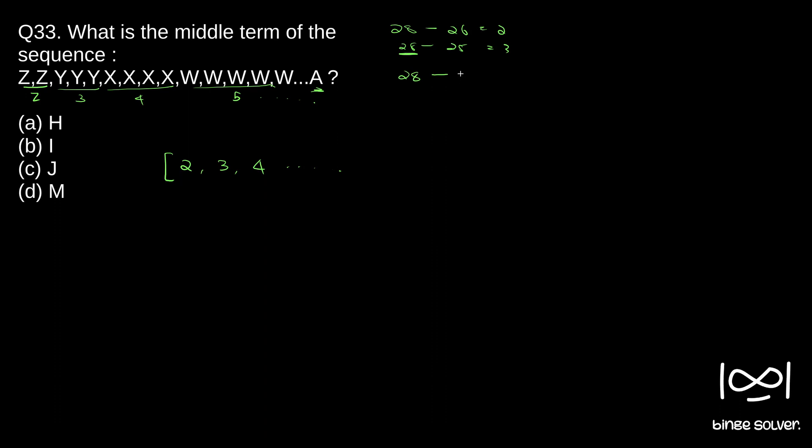So 28 minus A is what? One, first alphabet. So A is repeating 27 times. So 27. We get this as the sequence.